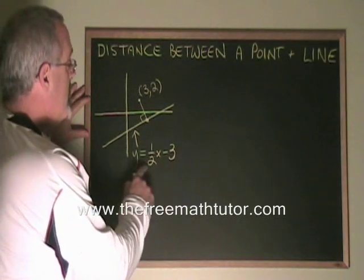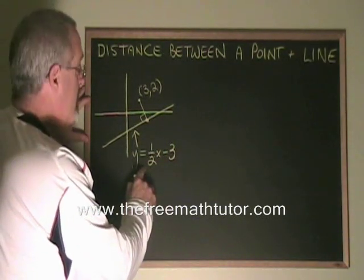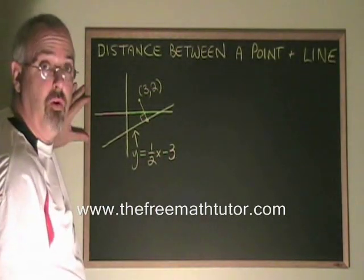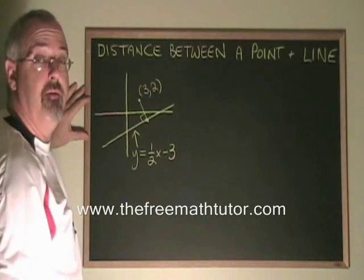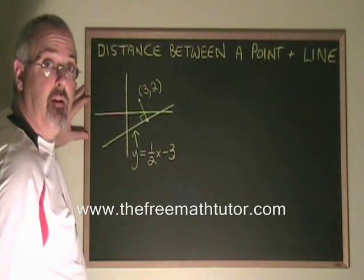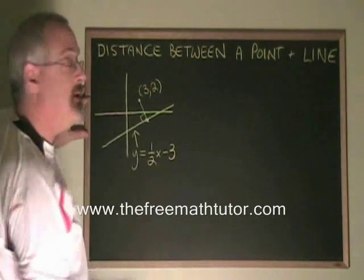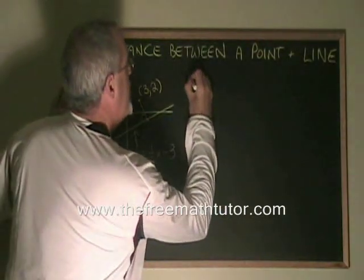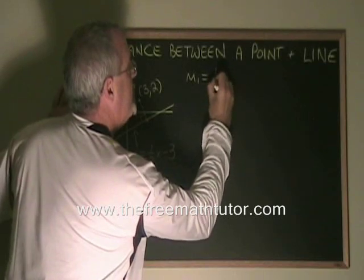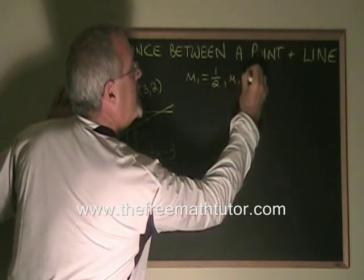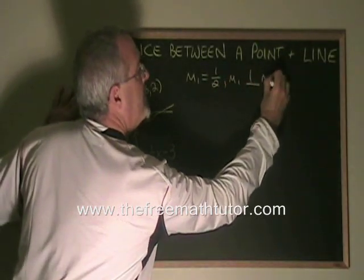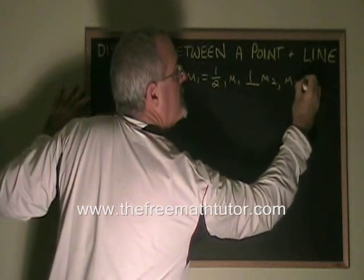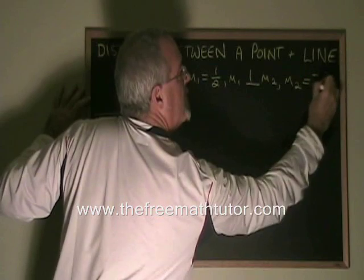We know that the slope of this line is one-half. The equation is in y equals mx plus b form. m is equal to one-half. And we know that since the two lines are perpendicular, the slope of this line has to be the negative reciprocal of one-half. We write m1 equals one-half. m1 is perpendicular to m2. Therefore, m2 must be negative 2 over 1.